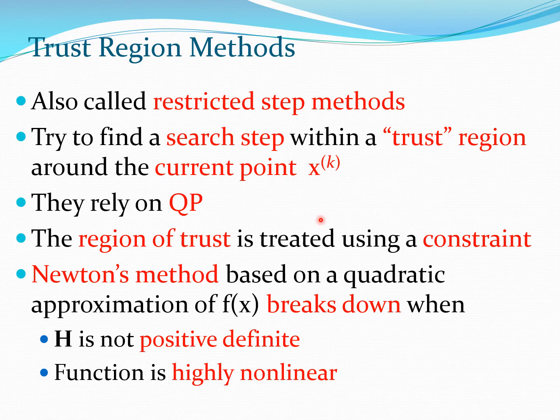Now typically these Trust Region Methods will rely on quadratic programming or some such type of sub-problem. And the region of trust is treated using a constraint.